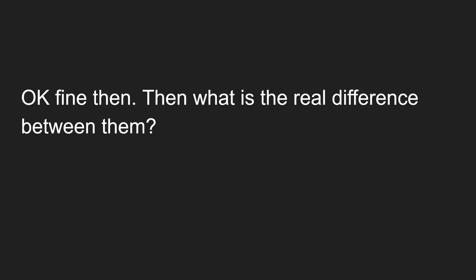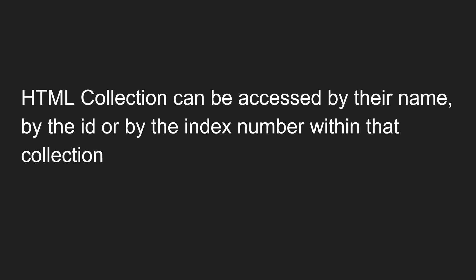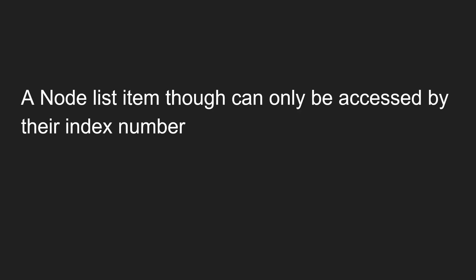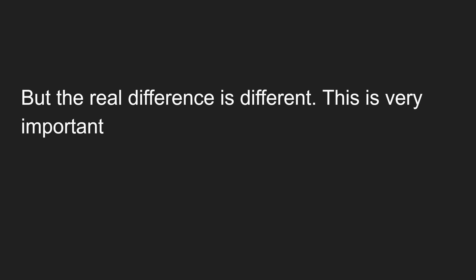So we understand the first difference: a NodeList can have any types of nodes — element node, comment node, text node — whereas an HTMLCollection can contain only element nodes. Now what is the real difference beyond that? An HTMLCollection can be accessed by name, by ID, or by index number. A NodeList item, though, can only be accessed by its index number. That is an important difference.